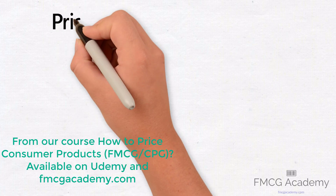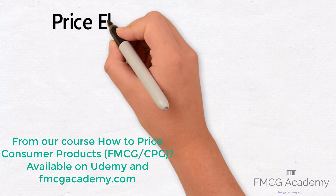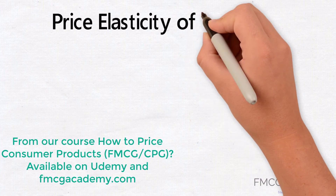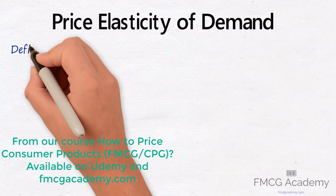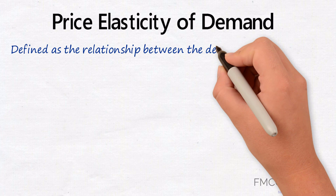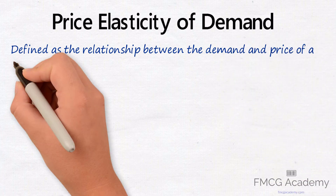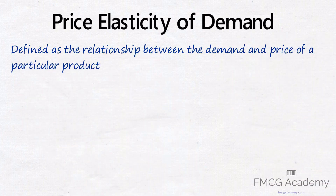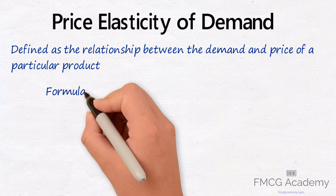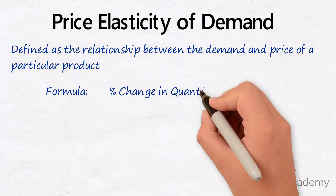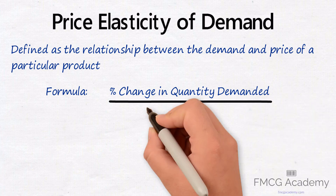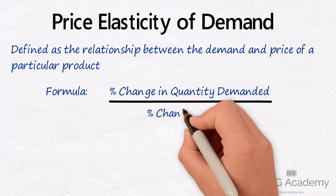At this stage it might help to give a brief overview of price elasticity of demand, a common economic theory. This is defined as the relationship between the demand and price of a particular product. The theory assumes a drop in price will increase demand, and the formula simply is percentage change in quantity demanded divided by percentage change in price. Pretty straightforward.